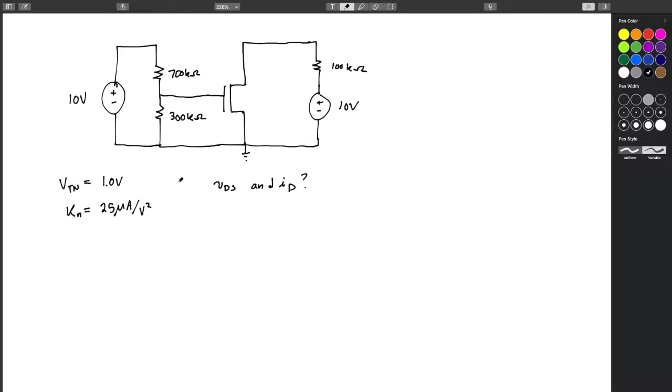So what we need to do is figure out VDS and ID. Before we even do that, we need to just maybe annotate what is the D, or drain, and what is the source, the S, or what is the G, the gate, of the FET. And when I go in and look at that, I know right away this is always the gate.